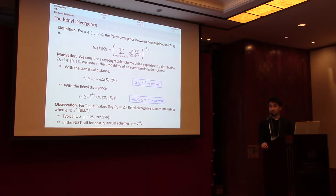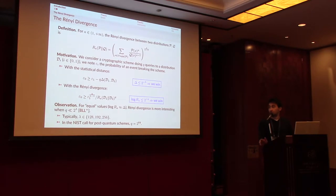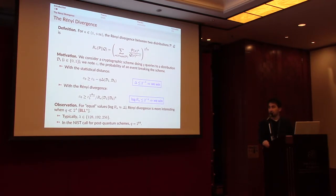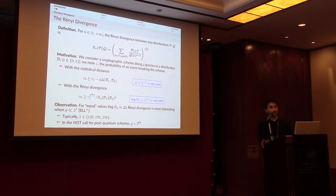This is interesting in lattice-based cryptography because in the upcoming NIST call for post-quantum schemes, they consider Q less than 2^64 and λ equal to 128, 192, or 256. So there is something to be gained if we manage to make the Rényi divergence small enough.